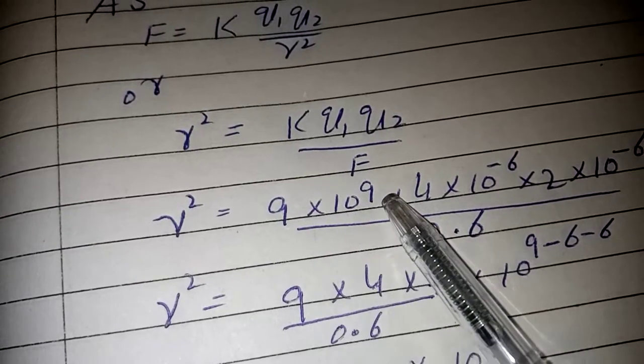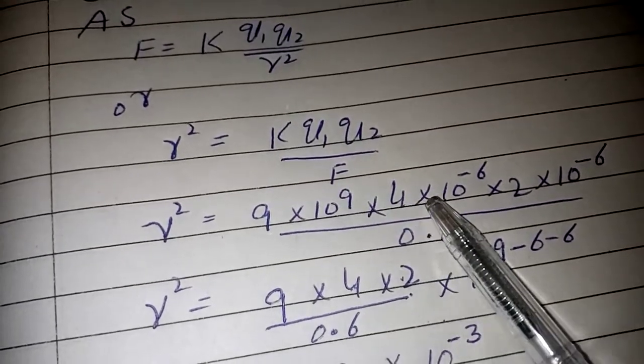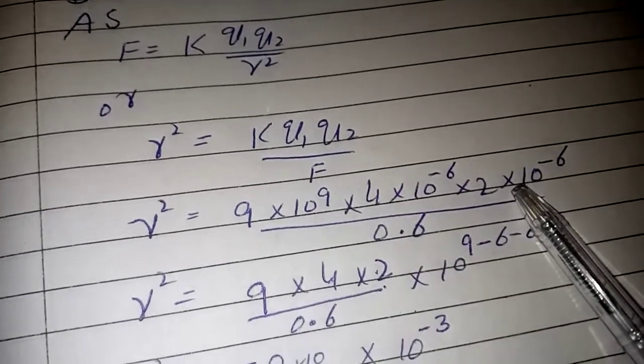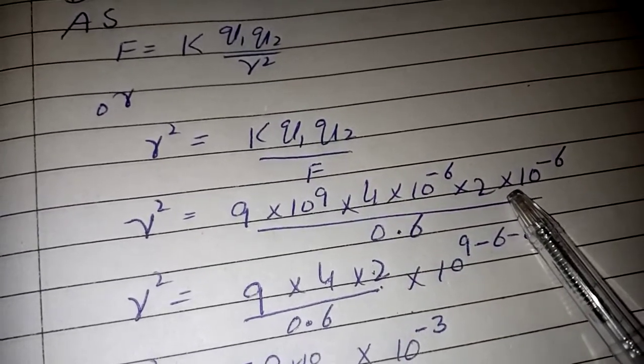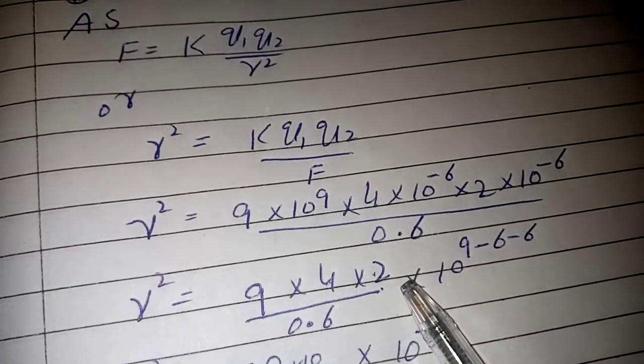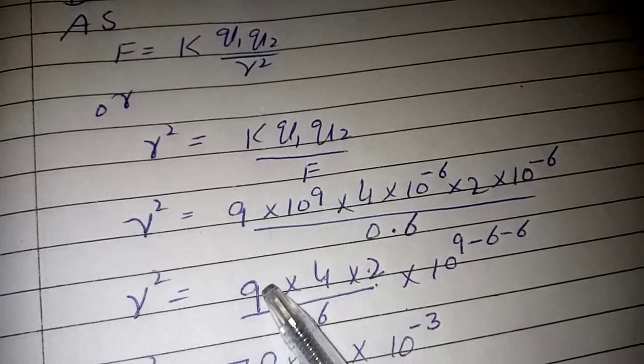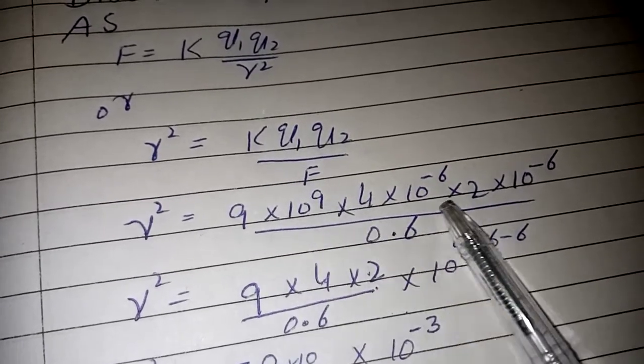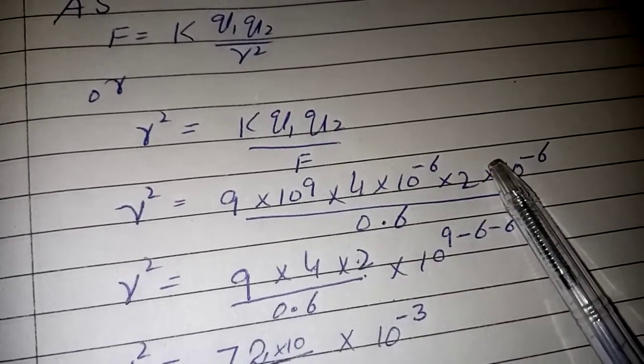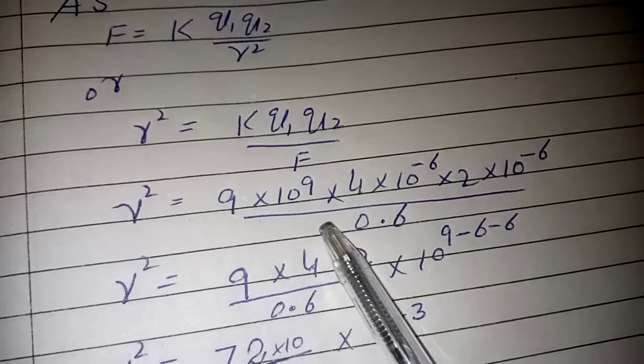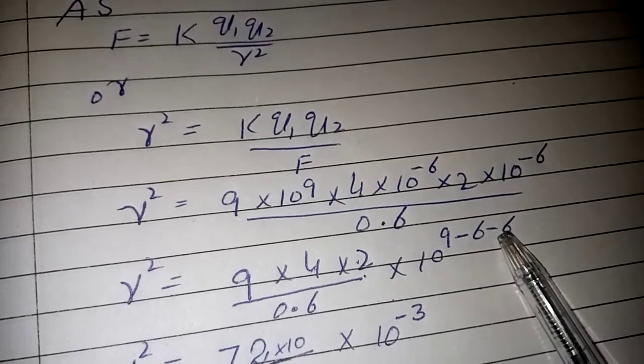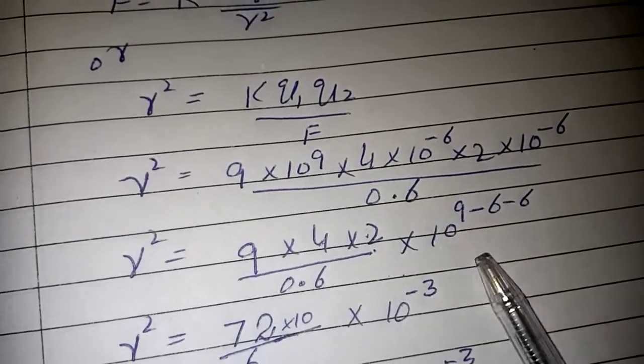Putting values: Q₁ is 4 micro coulombs, and micro means 10 to the power minus 6. Q₂ is 2 micro coulombs, and F is 0.6. So we write 9 multiply by 4 multiply by 2 upon 0.6. The exponential forms: 10 power 9 into 10 power minus 6 into 10 power minus 6. We add the powers when bases are same.